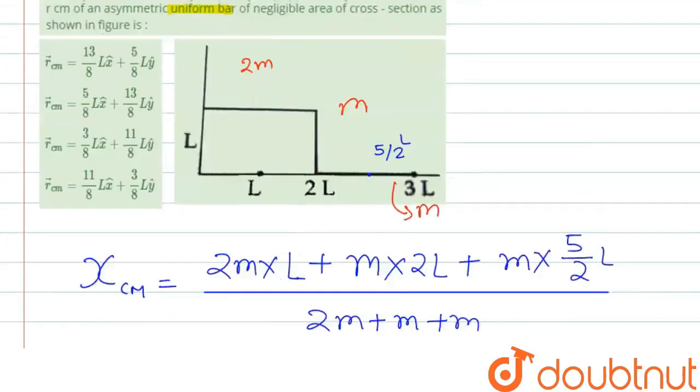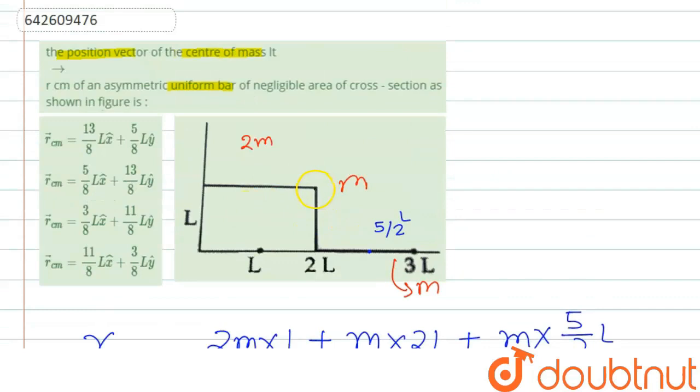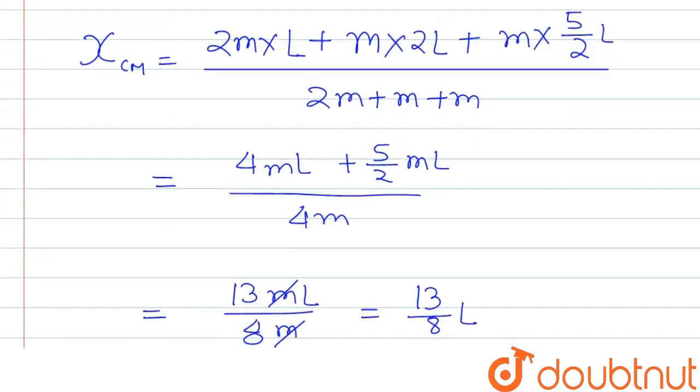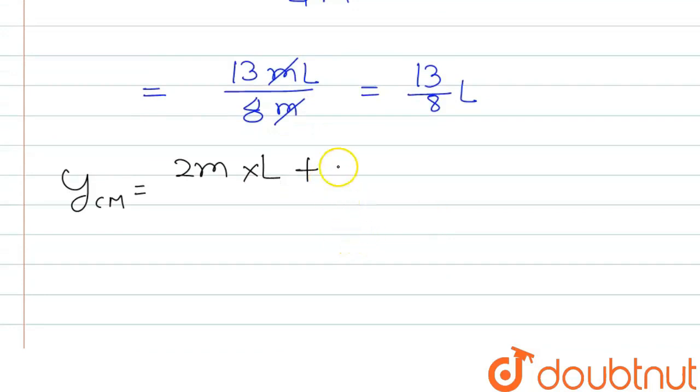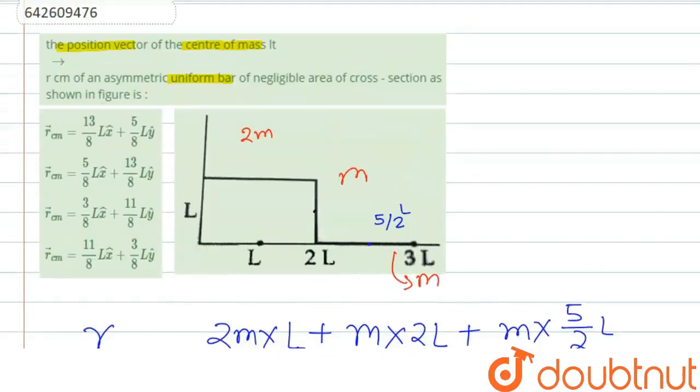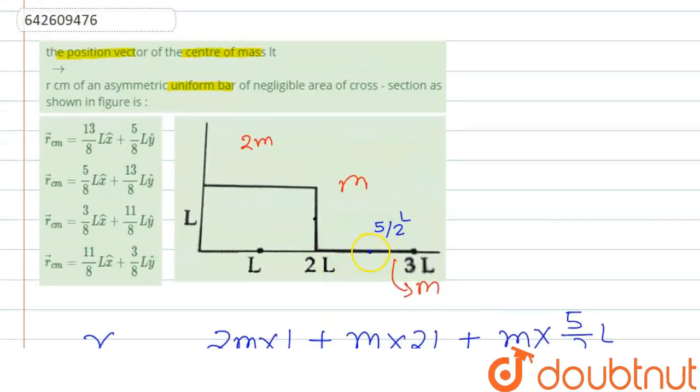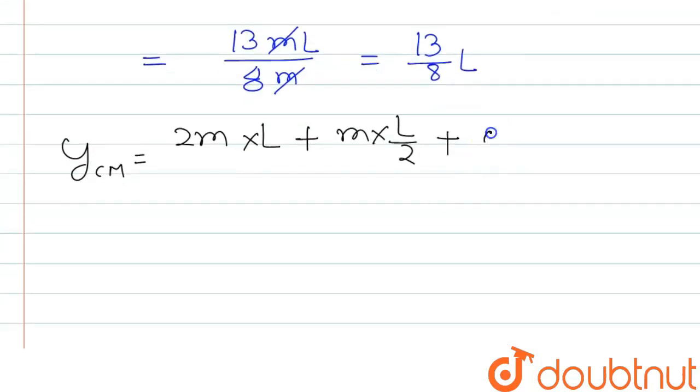Plus for the second bar, if we see the Y component, the mass is M but its center will be at L by 2. So we will write M into L by 2. And for the third, there is no distance for Y from the origin, it's 0. If we multiply mass with 0 it will be 0, so we can write 0. The total mass is 2M plus M plus M, that is 4M.